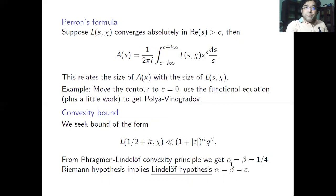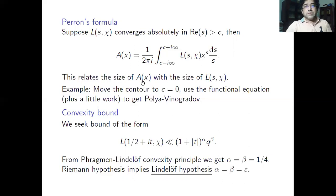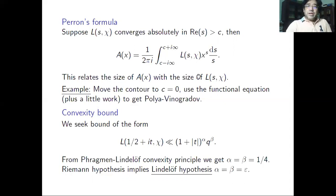The summatory function A(x) for χ(n) is related to L(s,χ) via Perron's formula: A(x) can be written as a contour integral of L(s,χ). To estimate A(x), we can estimate L(s,χ), then shift the contour to Re(s) = 0 and use the functional equation to recover the Pólya–Vinogradov bound.